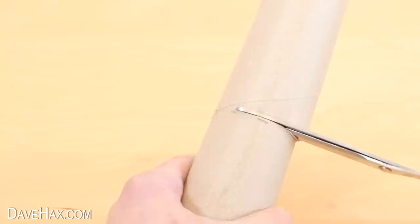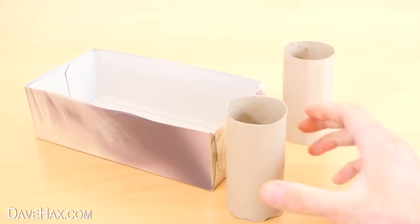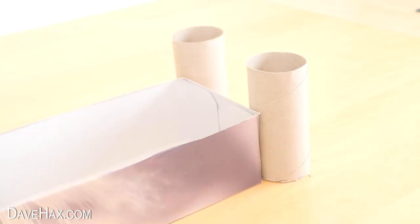To fit these to the castle wall, we need to cut some vertical slices the depth of the tissue box. So I put a couple of markers on the roll and used my scissors again to make the slice.